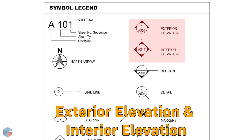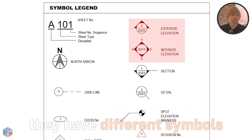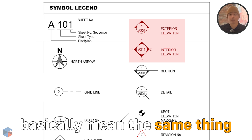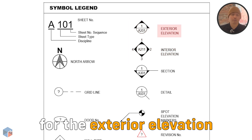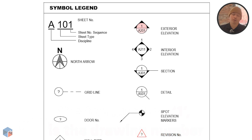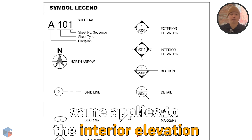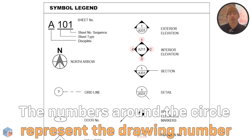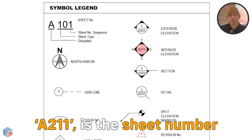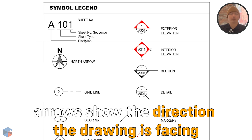Now we have the exterior elevation and interior elevation. Both are for elevation purposes but they have different symbols, though they basically mean the same thing. For the exterior elevation, the top number 1 is a drawing number, while 201 is a sheet number. The same applies to the interior elevation — the numbers surrounding the circle represent the drawing number, and the number inside the circle, A211, is the sheet number. Also, remember that the arrows show the direction the drawing is facing.